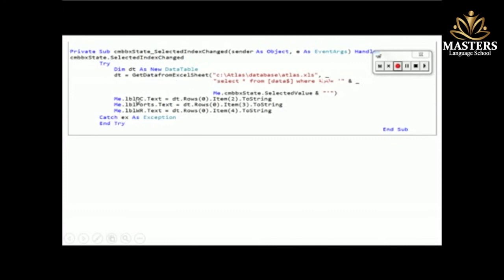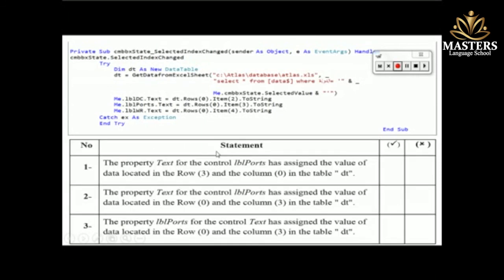We continue with the rest of the code: the DataTable is the source we work with from GetFromExcelSheet. Here we have the labels for countries, capitals, and ports — each assigned a row number and column number. The first question is: what does this code do? The answer is: it assigns the Text property of lbl_ports the value located at row zero and column three.